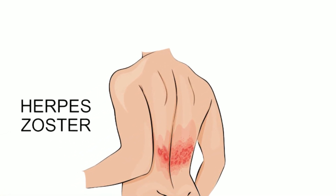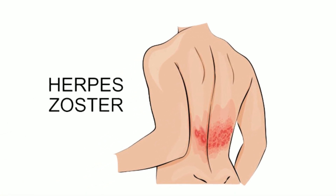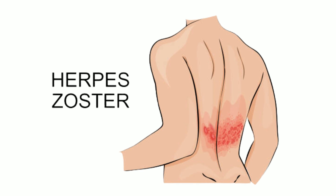A red rash often follows the pain, and it can appear dark pink, dark brown, or purplish according to the skin tone. This rash is characterized by being painful and itchy. The rash develops into clusters of vesicles, which continue to form over 3 to 5 days, and they usually heal in 2 to 4 weeks.